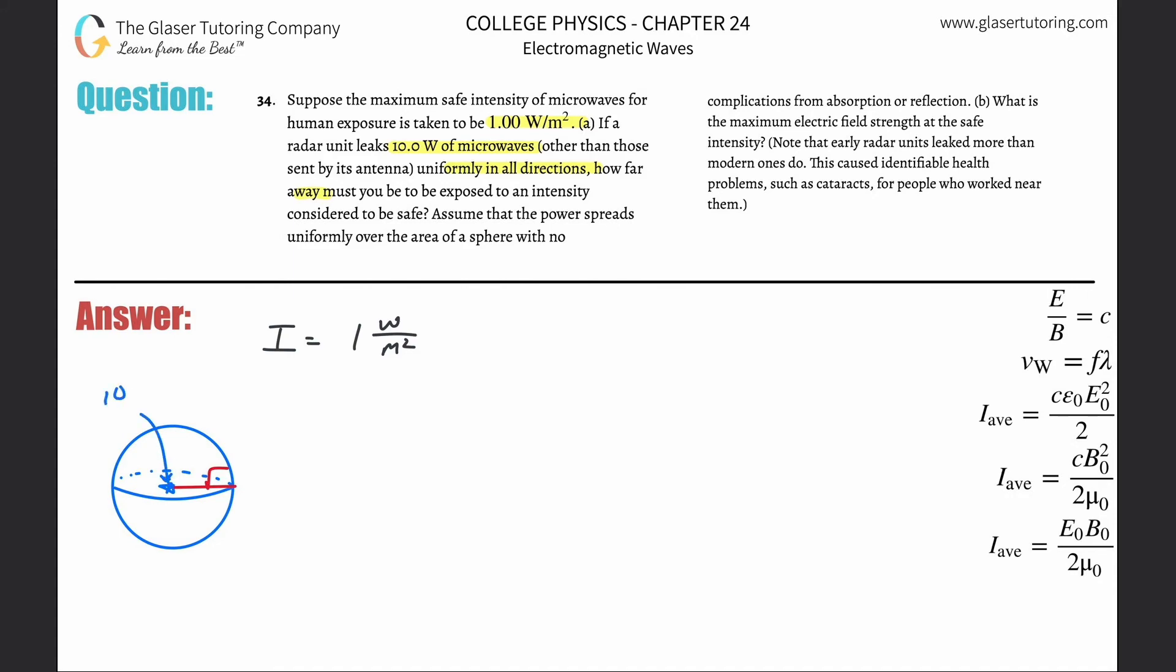This source they told us has a, or is emitting, 10 watts of microwaves. That's the power. We have to remember our intensity formula that intensity is going to be equal to power over area. Since we're dealing with a sphere, the area of a sphere is going to be 4πr².